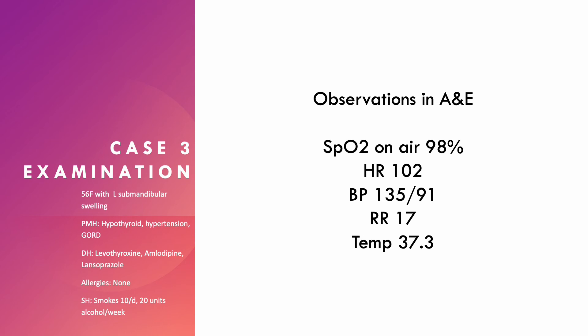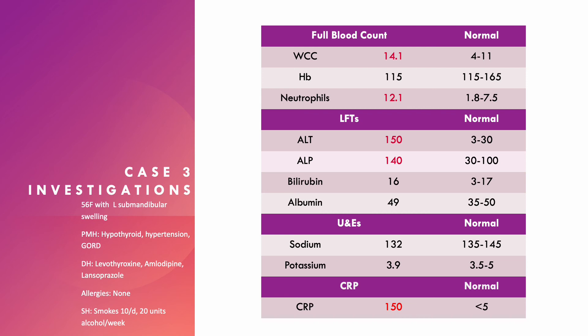Investigations include blood tests. Full blood count: white cell count 14.1, haemoglobin 115, neutrophils 12.1. Both white cells and neutrophils are raised, consistent with an infective picture in keeping with a submandibular abscess. Liver function tests: ALT is raised at 150 and alkaline phosphatase is also raised at 140. Bilirubin and albumin are normal.